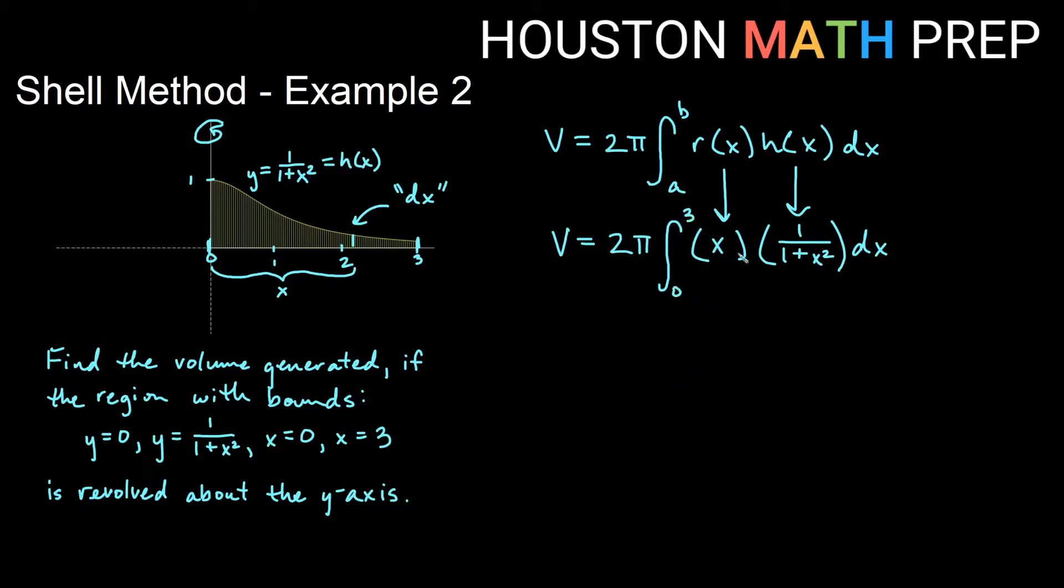I'm going to multiply these together so I have something easier to integrate. So I have 0 to 3, x over 1 plus x squared, dx. Take a second to look at it and see if you can figure out how we would integrate this. It's not just a basic power rule, but it can be done by u-substitution.